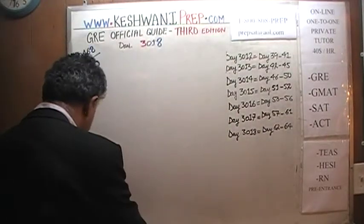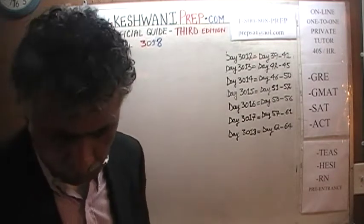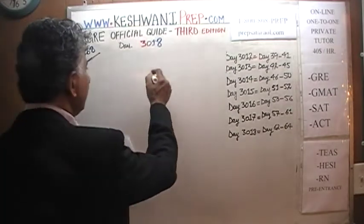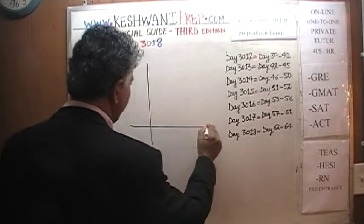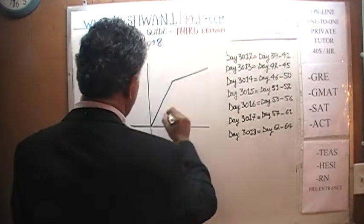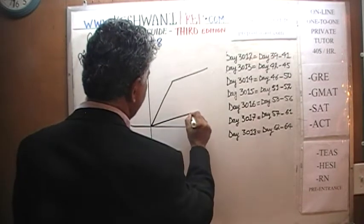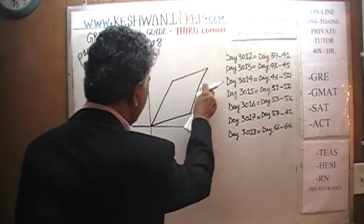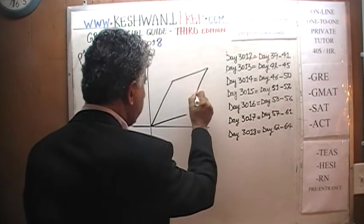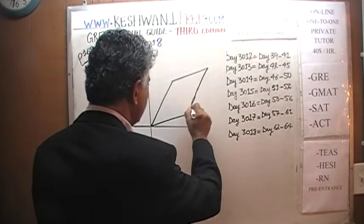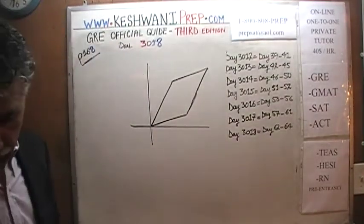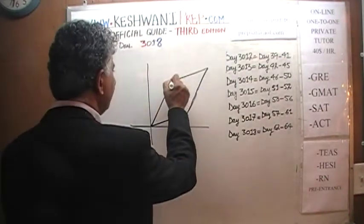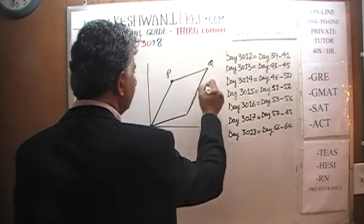Let's take a look at problem number 10. We are given a parallelogram OPQR. Let's put it on the blackboard. We need a line parallel to that line, and a line parallel to this other line — voilà, that's a parallelogram. So we have the origin O, and points P, Q, and R.